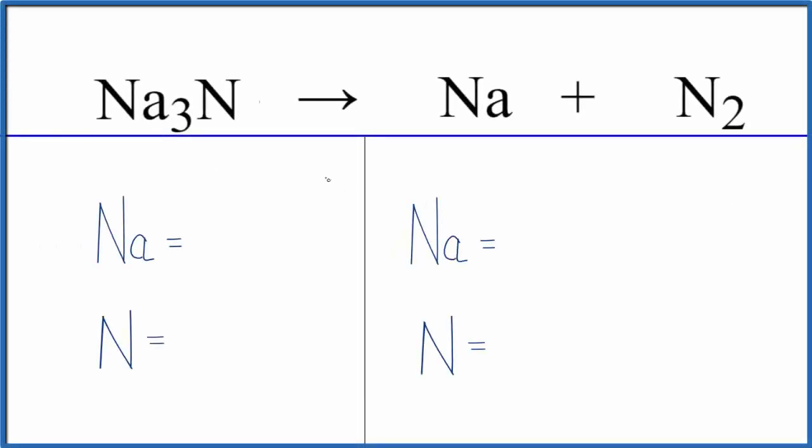In this video, we'll balance the chemical equation Na3N, sodium nitride, decomposing into sodium metal and nitrogen gas. Sodium nitride is very unstable, so it decomposes quickly into sodium and nitrogen gas.